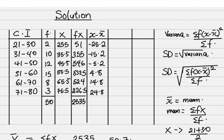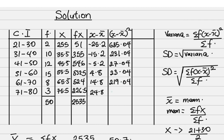From the formula we need (x minus x̄) squared, so we square each value in that column. Squaring gives: 635.04, then 231.04, then 27.04, then 23.04 — wait — then 219.04, and lastly 615.04. You need to be good with your calculator to pull this off.